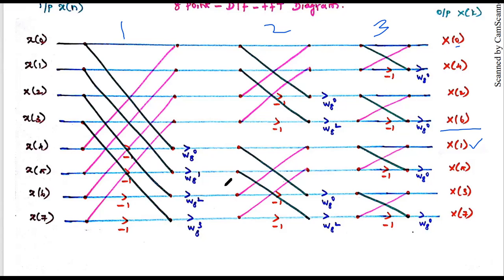The minus-one multiplier is the same as in the DIT algorithm — four minus-one multipliers per stage. In the eight-point butterfly, the lower four lines get the minus-one multiplier. In the four-point butterfly, the first two lines are left and the next two lines use minus-one. Similarly in the lower two lines, minus-one is used. In the third stage, in the two-point butterfly the lower line uses minus-one. So each stage has four minus-one multipliers.